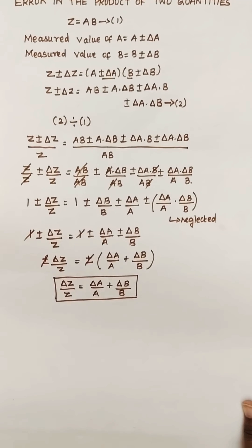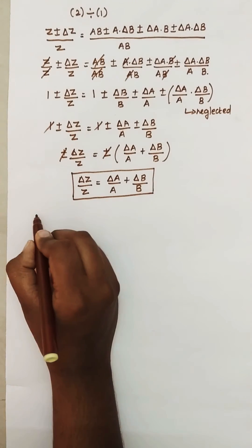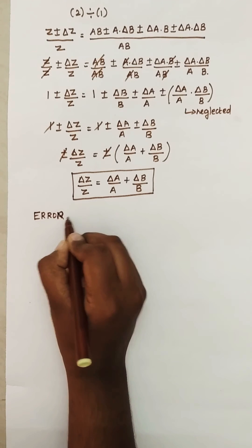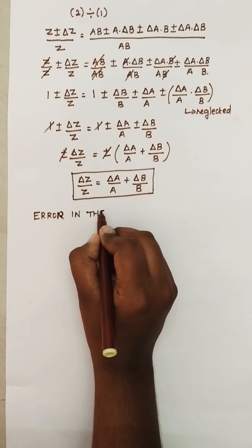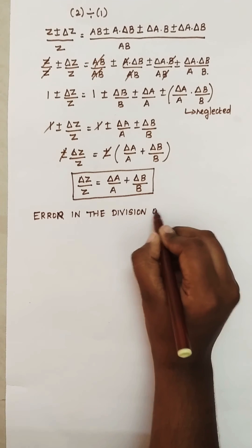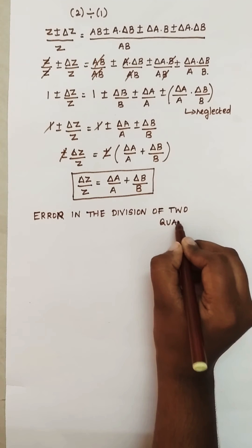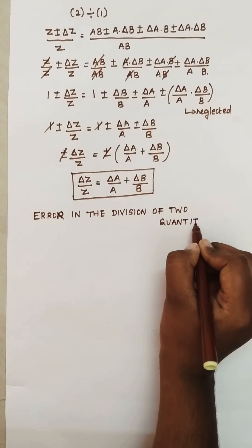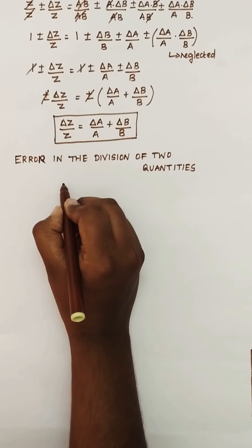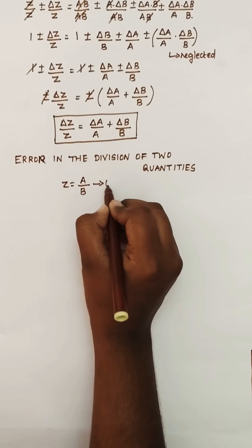Same way, we are going to see the error in the division of two quantities. So for division, what is my z value now? z equals a divided by b. Take this as the first equation.